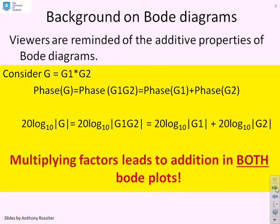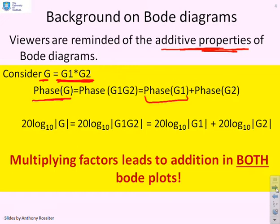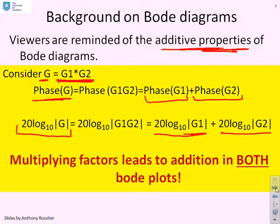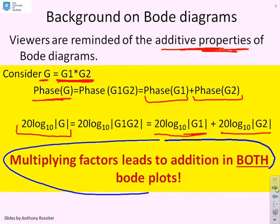Some more background: if you look at the additive property of Bode diagrams, if G is the product of G1 and G2, then the phase of G is the phase of G1 plus the phase of G2 — you just add the phases together. Similarly, for the gain plot, 20·log₁₀|G| equals 20·log₁₀|G1| plus 20·log₁₀|G2|. So when you multiply compensators or systems together, you're simply adding their Bode plots together, and that's what we'll use in this video.